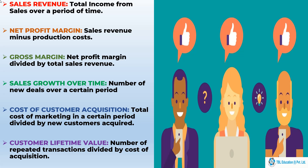Second, Net Profit Margin: Sales Revenue minus your production cost. This is also pretty simple. The amount of money that it takes for you to produce your product — to create it, to get all the materials — is subtracted from the sales revenue that you get.